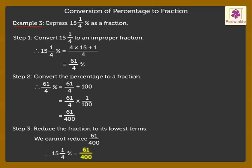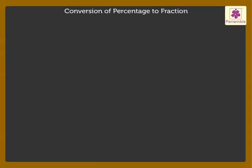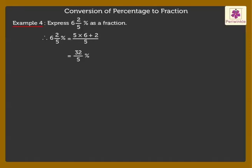Now, let's solve one more example of the same type. Example 4: Express 6 and 2 upon 5% as a fraction. Firstly, convert 6 and 2 upon 5% to an improper fraction, which is equal to 32 upon 5%. Now, by converting the percentage to a fraction, we get 32 upon 500. By reducing it to the lowest terms, we get 8 upon 125. Therefore, 6 and 2 upon 5% is equal to 8 upon 125.